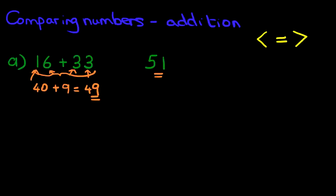So which number is smaller? Now this is nice and easy. We know that 49 has got four tens and 51 has got five. So four is less than five. Therefore, the symbol we have to use is this one. Because 49 is less than 51. So therefore, this now reads 16 plus 33 is less than 51. It's as simple as that.